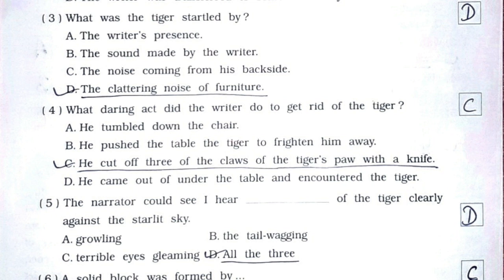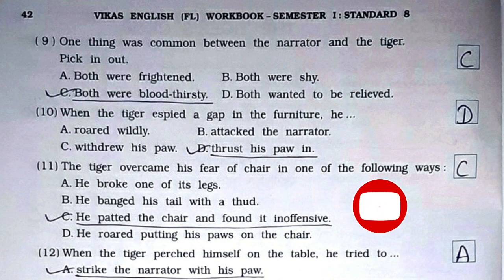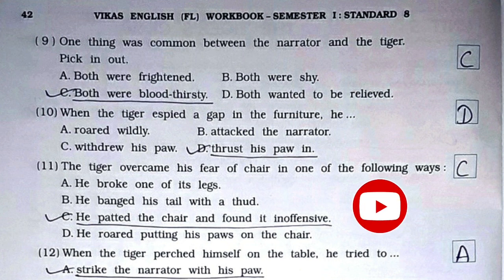MCQ 5: When the narrator could clearly see the tiger against the starlit sky — option D: all three. MCQ 6: A solid block was formed by — option C: the chair, table and stool. MCQ 7: The most hideous sound for the narrator was — option A: the tiger scratching the floor. MCQ 8: We generally see circus men managing wild animals with merely — option D: a chair. MCQ 9: One thing common between the narrator and the tiger — option C: both were bloodthirsty.